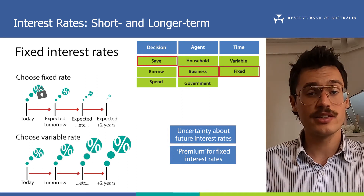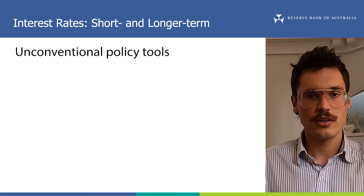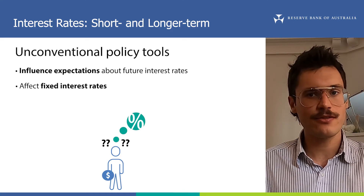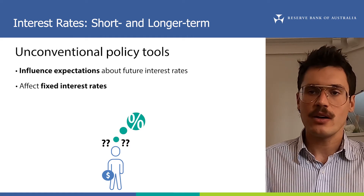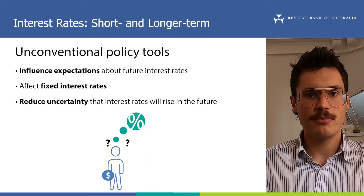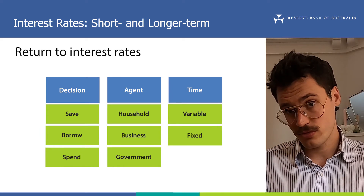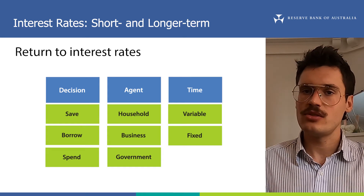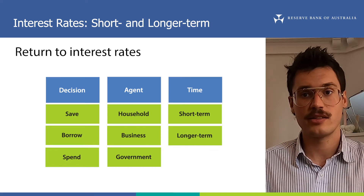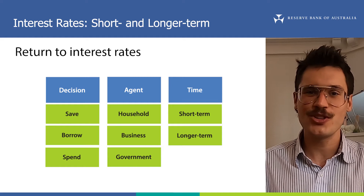So where do unconventional monetary policy tools come into the picture? Well, one way these tools can work is by influencing expectations about future interest rates, including the future cash rate, to affect how lenders of money set fixed rates. They can also affect some fixed interest rates directly, and they work by reducing uncertainty about whether interest rates will rise in the future, and so reduce the term premium. Now, in financial markets, rather than talking about variable and fixed rates, we tend to talk instead about short and longer term rates. They are really the same thing — short term rates are very similar to variable rates, and longer term rates are like fixed rates. So we'll switch to using that language now.